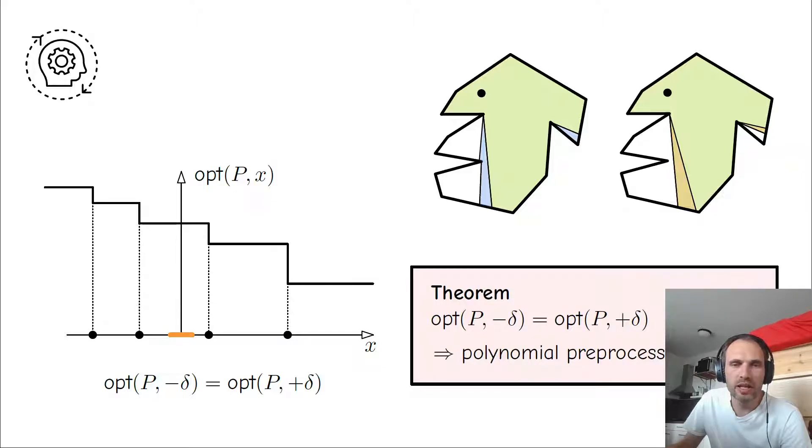I mean, zero is just normal guards. Guards that are not enhanced or diminished. And our assumption is that around zero, for some small delta, nothing happens. And then our theorem says that under this condition, we can do a polynomial time pre-processing and then we solve one ILP and then we will get the optimal number of guards. Note that we can't check this condition here.